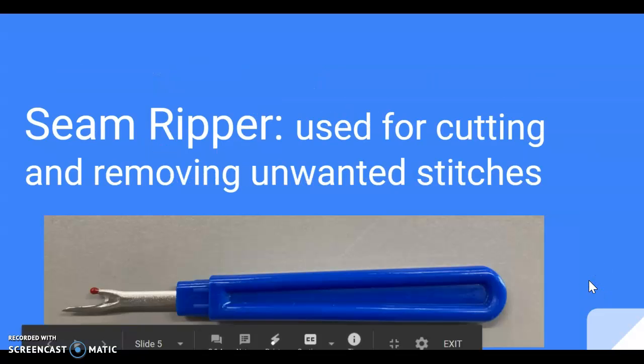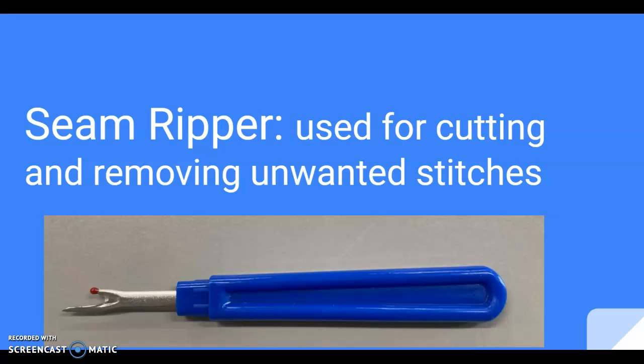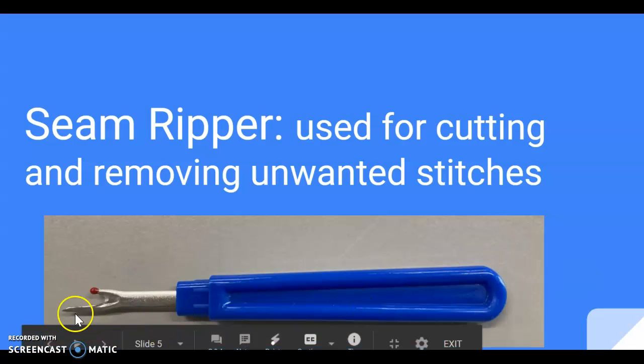A seam ripper is something that you can use to remove stitches. If you need to use a seam ripper because you make a mistake or you decide you don't like how your stitches look, you always want to make sure that the sharp tip is pointed away from you.